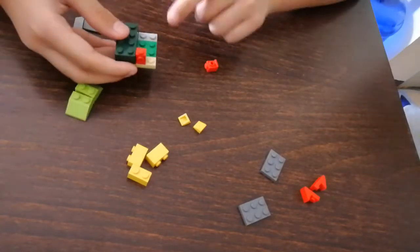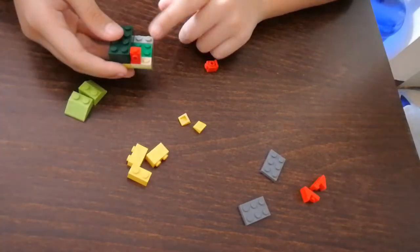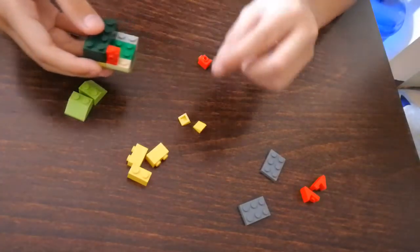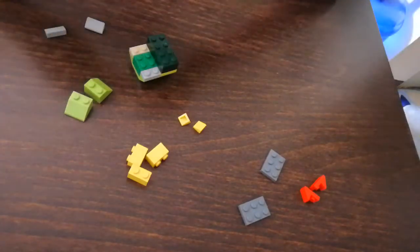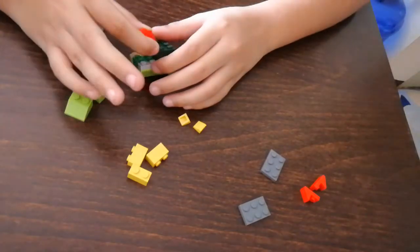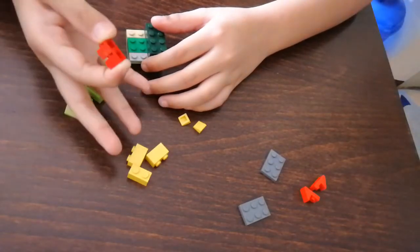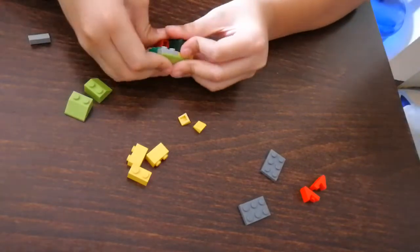But before we place that in there, you connect these two SNOT bricks and attach them together like so. Then you take three 1x2 bricks or a 1x2 and a 1x4.